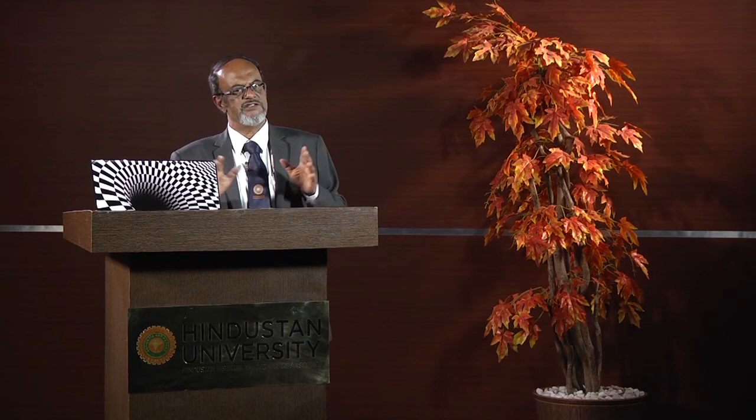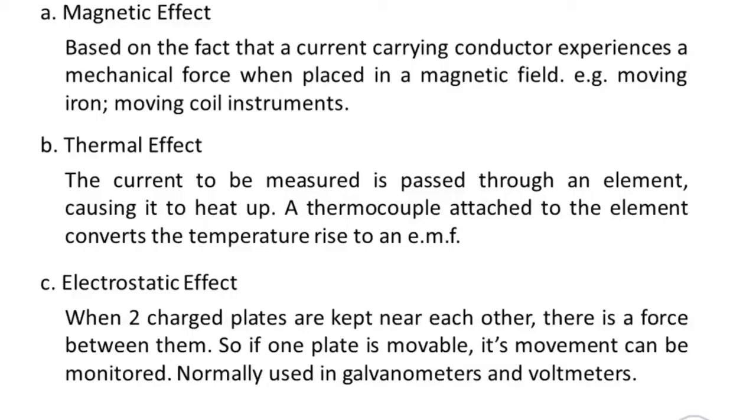Instruments like galvanometers, which are essentially used to sense the presence of a current — not to measure the value of the current, but just to sense its presence — are typically working on an electrostatic principle. When you have two charged plates near each other, they experience a force — either attractive or repulsive. If one of these plates is movable, we can translate that movement into an indication.